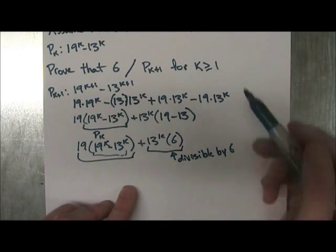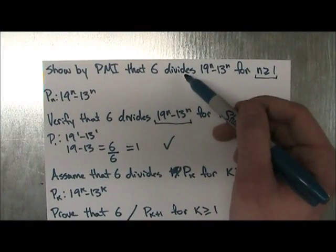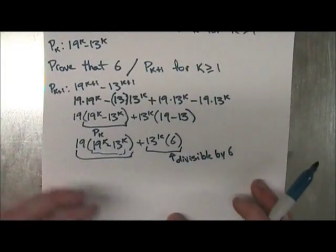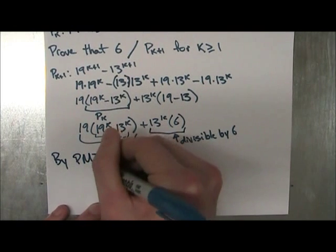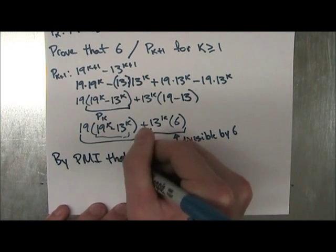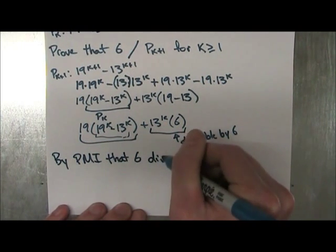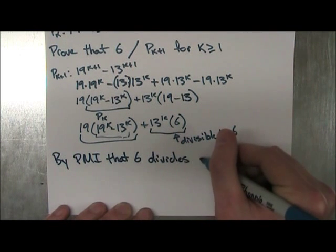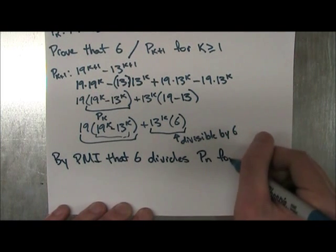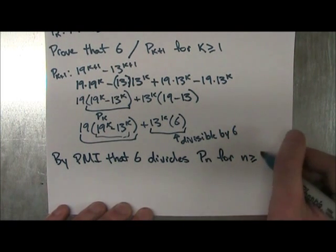And because 6 is what we're looking for, divide 6, it works. And we can now conclude by PMI that 6 divides P_n for n greater or equal to 1.